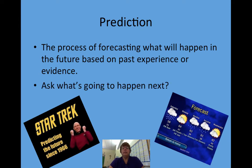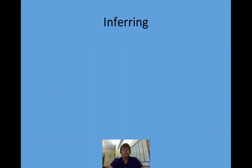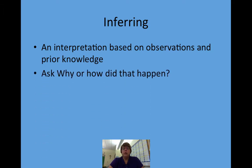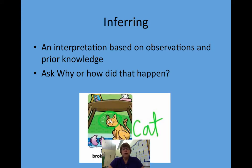Whenever you want to predict something, you're always going to ask: what is going to happen next? Inferring is an interpretation based on observations and prior knowledge. That means asking why or how something happened. For example, you look at something and say, 'how did that happen?' — well, there's a cat and a broken vase on the floor, so I'm guessing the cat probably knocked it off.